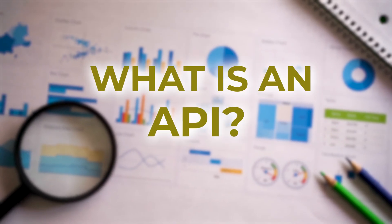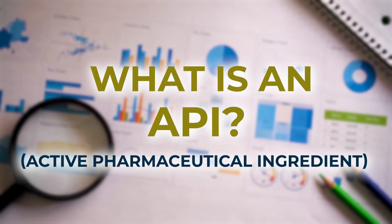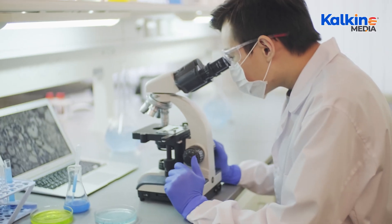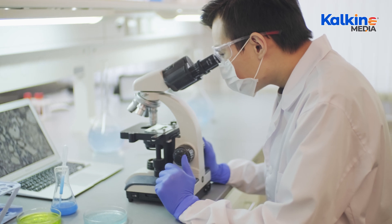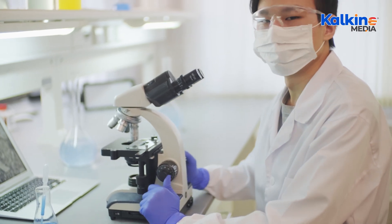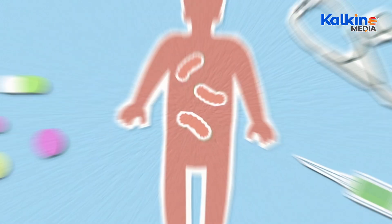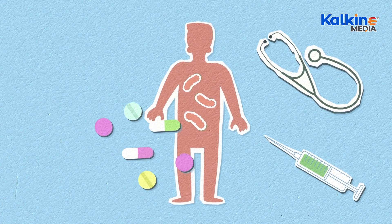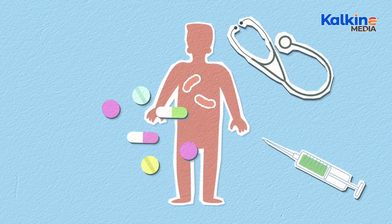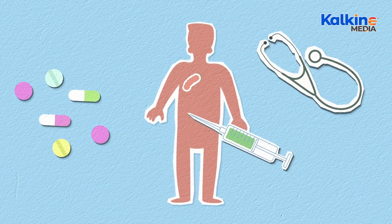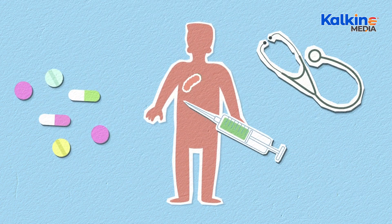What is an API? An active pharmaceutical ingredient, API, is a substance used in the production of pharmaceutical products, directly impacting the diagnosis, treatment, and prevention of diseases by affecting the human body's structure and function.